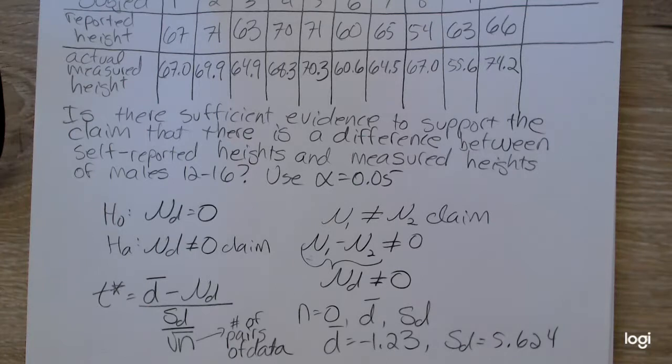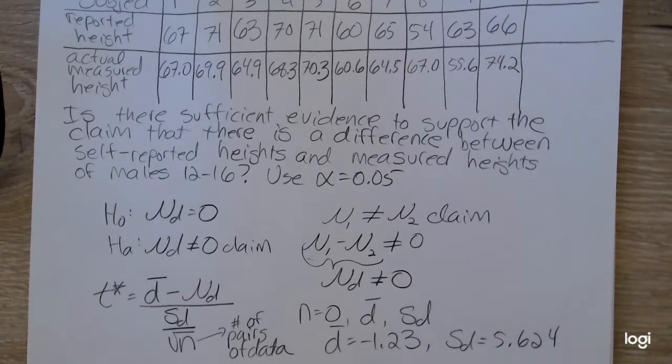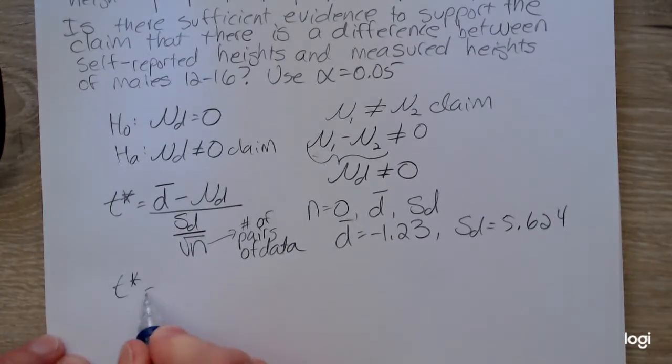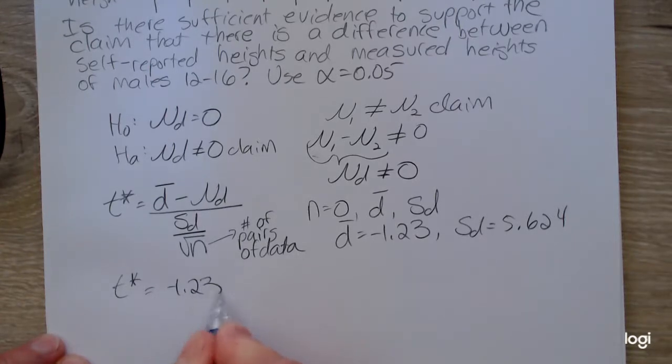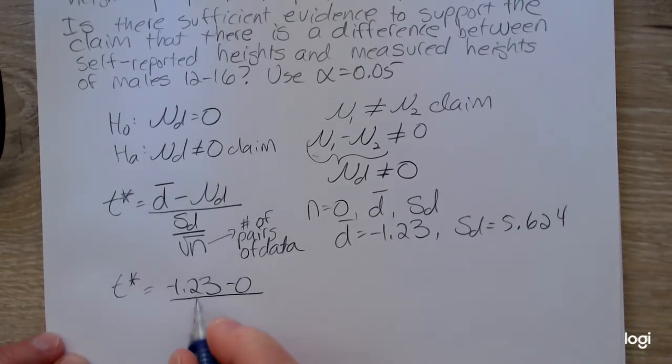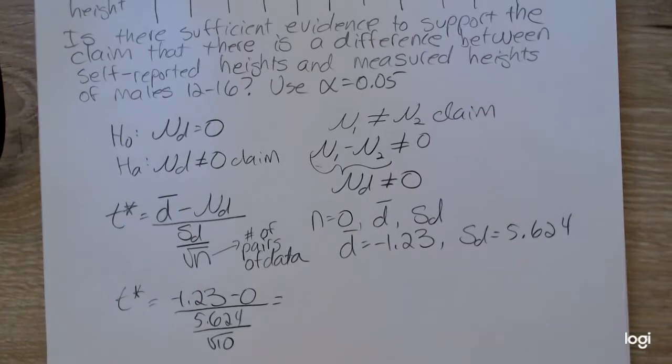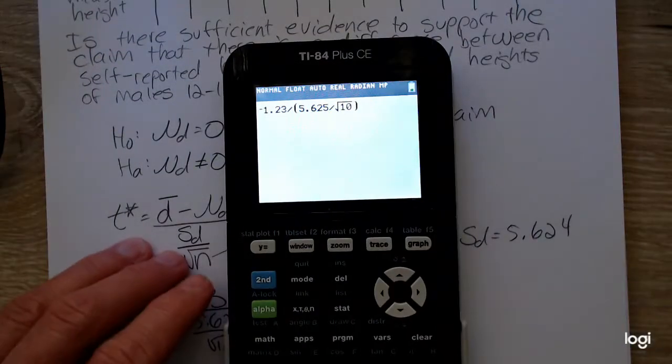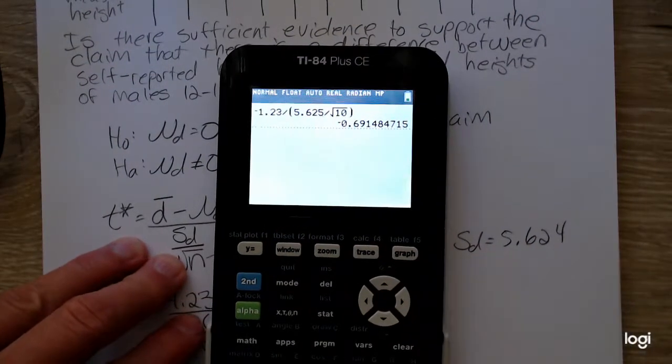After you have all of the pieces, it's straightforward to input into the test statistic formula. I'll have negative 1.23 minus 0 over 5.624 over the square root of 10. That standardized test statistic will be negative, and inputting that into my calculator, I get negative 0.691.